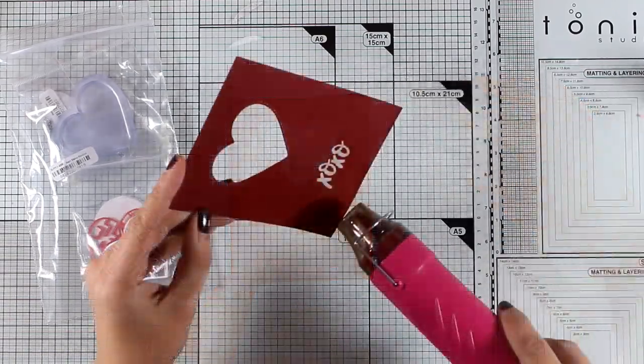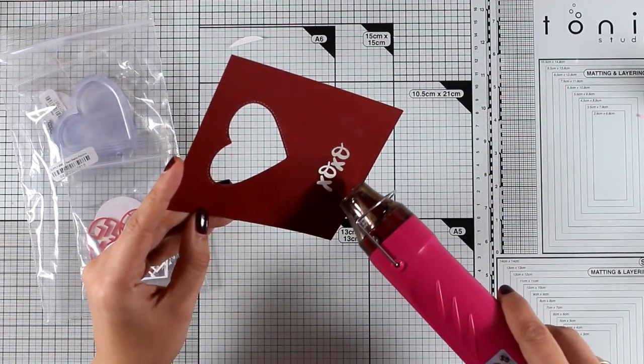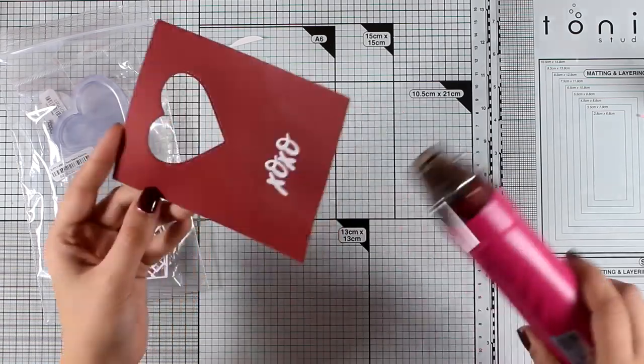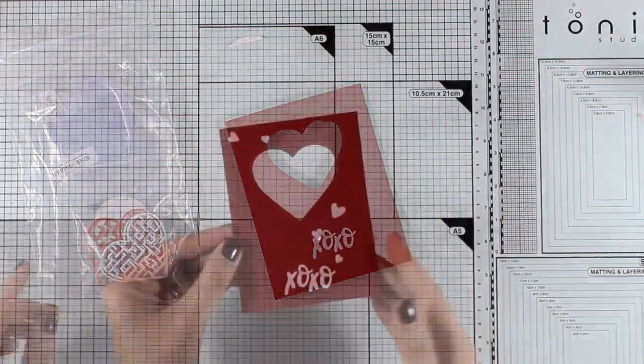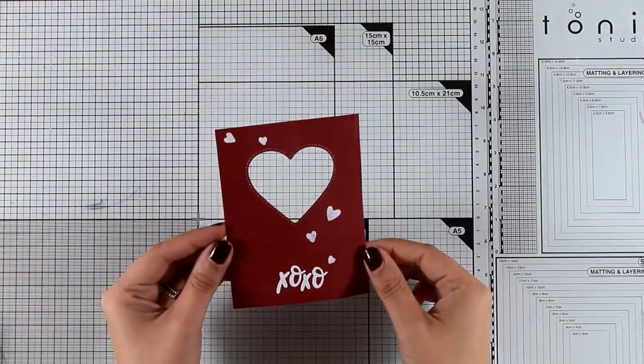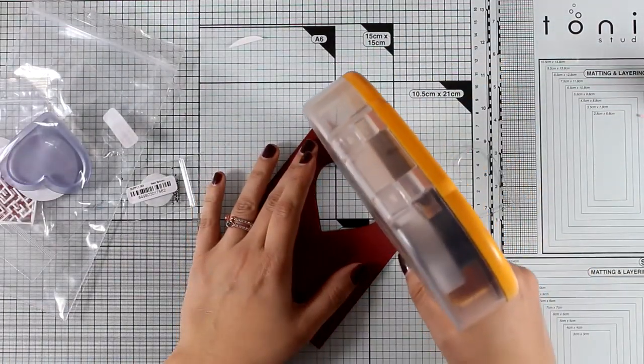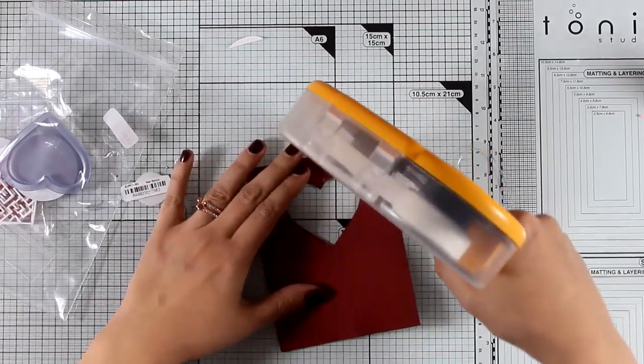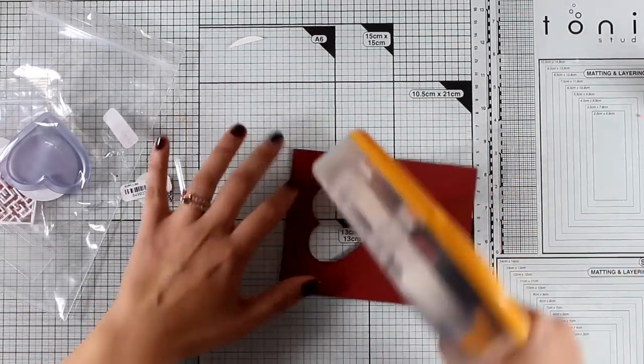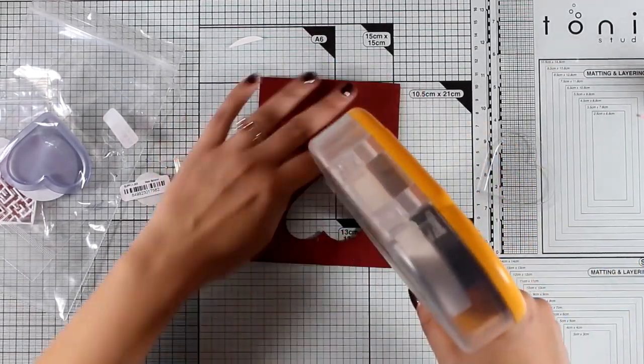I'm going to stamp that with my Versamark ink and then I'm going to use my white embossing powder to heat emboss it. I also stamped and embossed with white embossing powder some hearts spread all around my panel. These hearts came from the same stamp set as the sentiment which is called Valentine's Wishes.